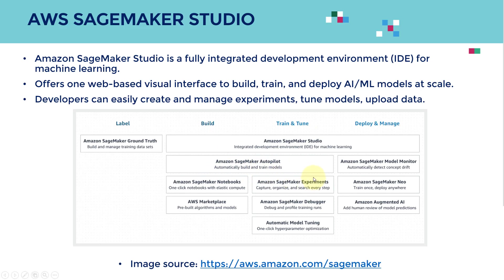Within Amazon SageMaker Studio, you will also be able to manage experiments, which is a very important feature. You'll be able to tune the model as well, and kickstart a hyperparameter tuning job.